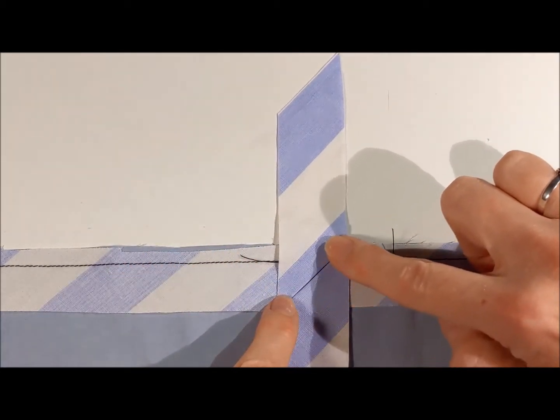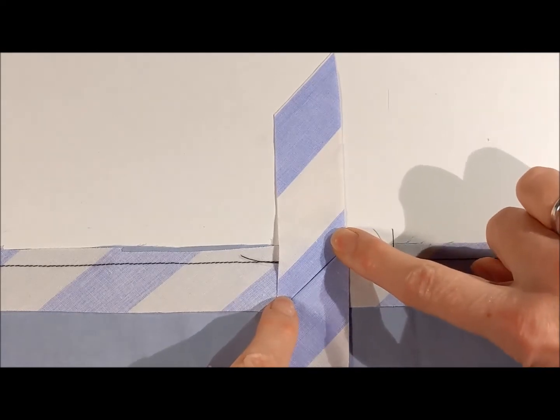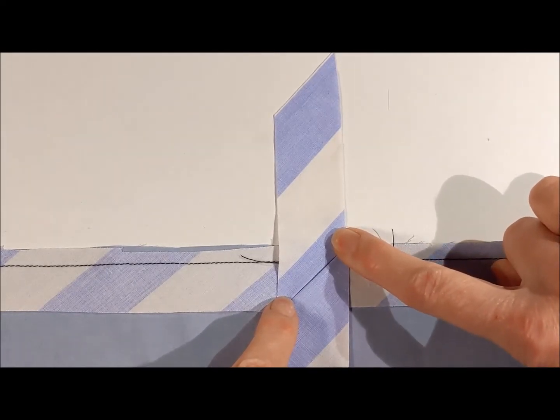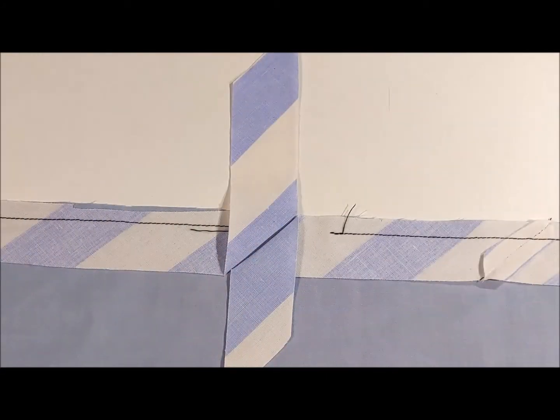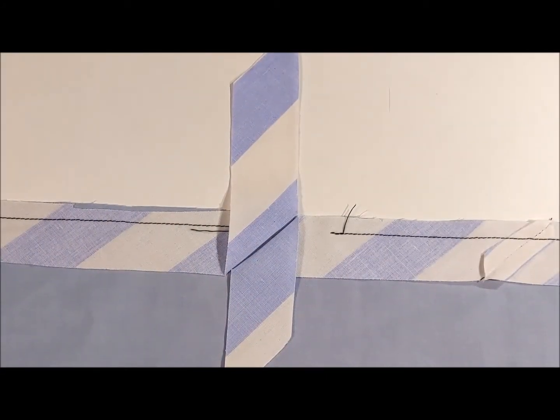Because that is the straight of the grain. And if they're ironed we can see the crease and it'll be a lot easier to do. Now that I've ironed it I want to pin it so that I can sew it.